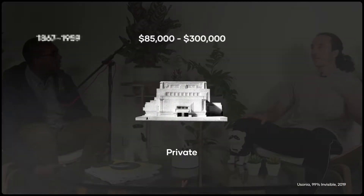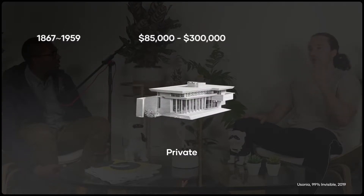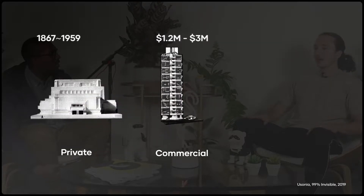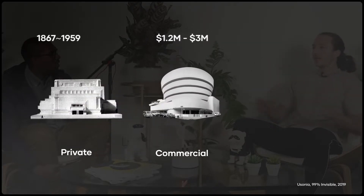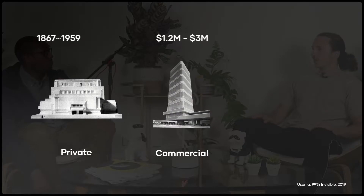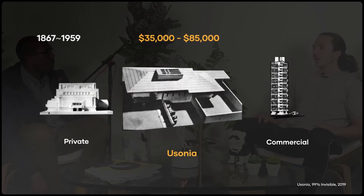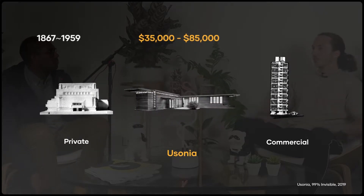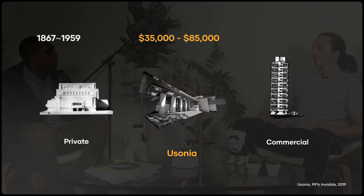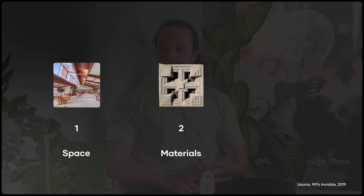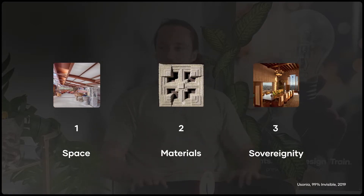Frank Lloyd Wright, from the 1920s and 30s, was an architect who, in a 70-year career, designed these temple-like, palatial buildings for quite aristocratic clients. Then towards the later end of his life, he decided he was going to design low-cost modular houses for the middle class, through functional use of space, materials, and a focus on the sovereignty of the individual.